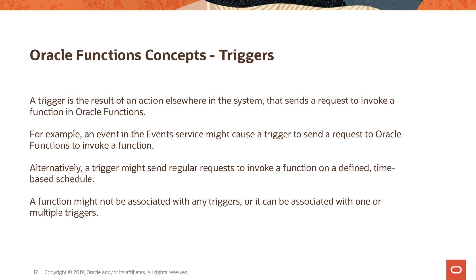Triggers are actions in the system that send a request to invoke a function specified in Oracle Functions. The trigger event could be something in the OCI Events service, or you can trigger a function using HTTPS endpoints or a defined time-based schedule. You can associate specific triggers to a function, have more than one trigger, or have functions with no trigger.